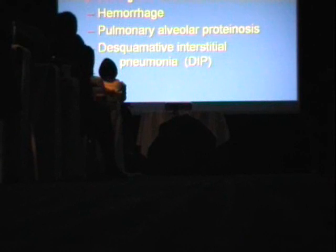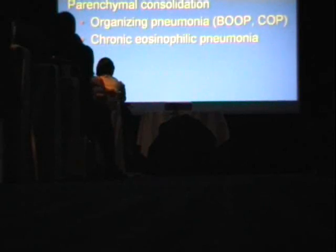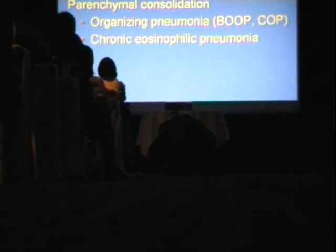Ground glass differential diagnoses on HRCT include pulmonary hemorrhage, pulmonary alveolar proteinosis, and desquamative interstitial pneumonia — probably the three most common differentials. For parenchymal consolidation with confluent opacities and air bronchograms, organizing pneumonia and chronic eosinophilic pneumonia are probably the most frequent entities in my experience.